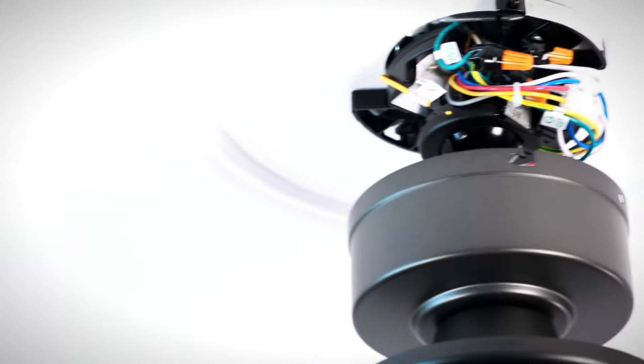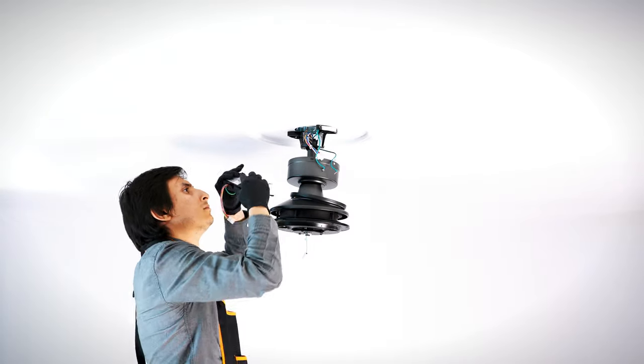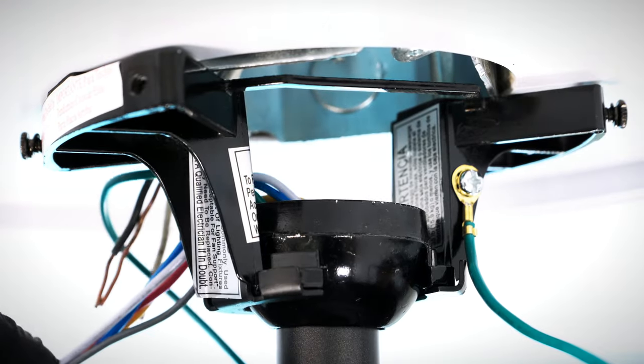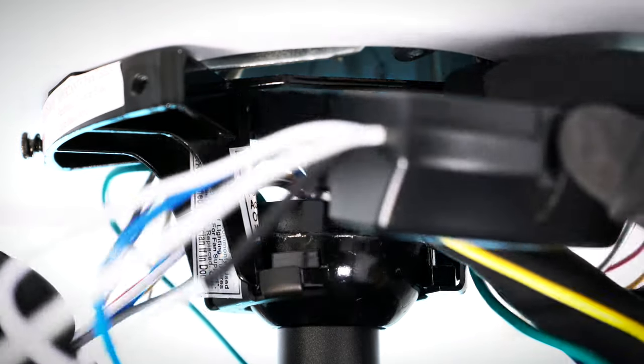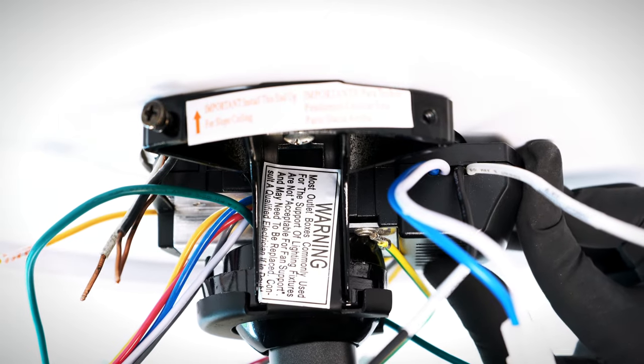Now you can make the electrical connections. Bring the receiver up to the ceiling box. Slide the receiver into the bracket with the flat side facing up. If the receiver doesn't fit, tilt the hanger ball as you guide it in.